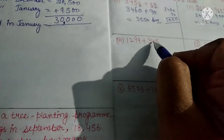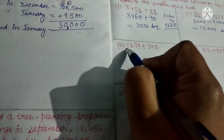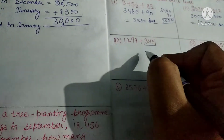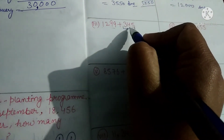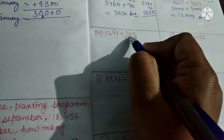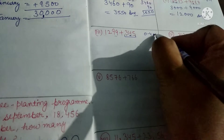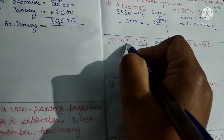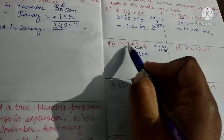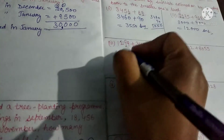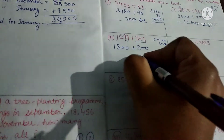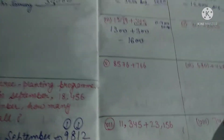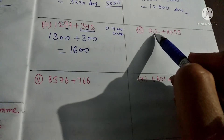Now in the third question it is in the hundred-thousands place. First we have to observe the value and round off accordingly. If it is the hundreds place, we have to see the tens place. The tens place is 4, which is between 0 to 4, so no change — it stays as 300. For the other number, the tens place is 9, so we add 1, giving 1300. Now add both: it becomes 1600.